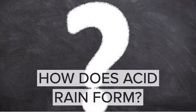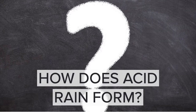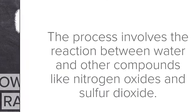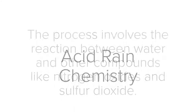How does acid rain form? Acid rain is formed through a complex chemical process that occurs naturally. The process involves the reaction between water and other compounds like nitrogen oxides and sulfur dioxide.